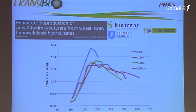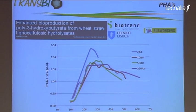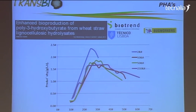At BioTrend, we successfully scaled up a process for production of PHB in the scope of a European project, where wheat straw hydrolyzate was used as feedstock. As you can see here, we were able to maintain productivity in the biggest scale for a very long period of about 20 hours, which is really good in a large fermentation vessel.